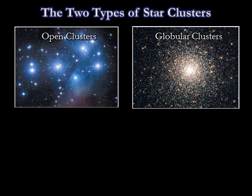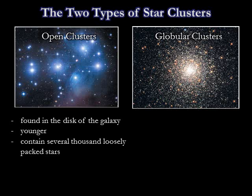There are two basic types of star clusters: the moderately sized open clusters and the densely packed globular clusters. Open clusters are found in the disk of the galaxy and tend to be young in age. They can contain up to several thousand stars and typically are about 30 light years across.